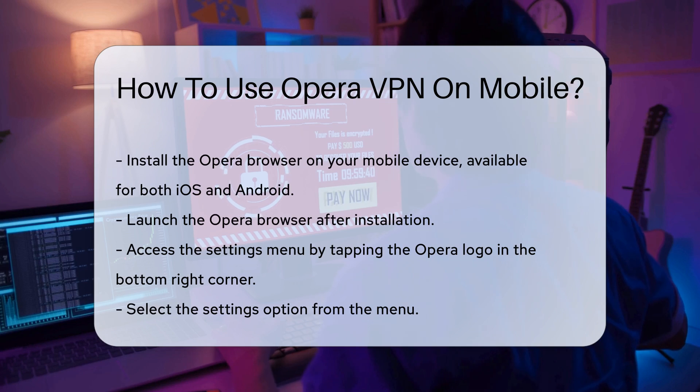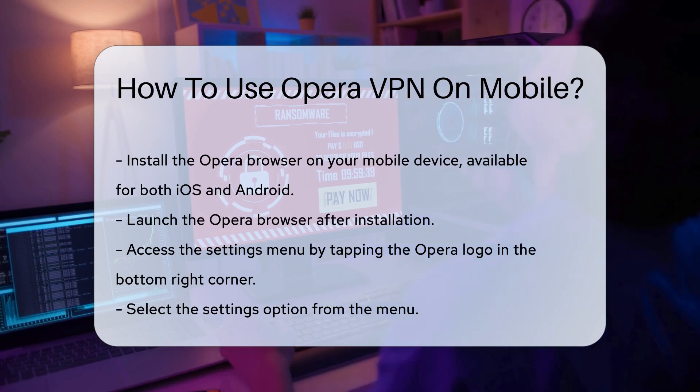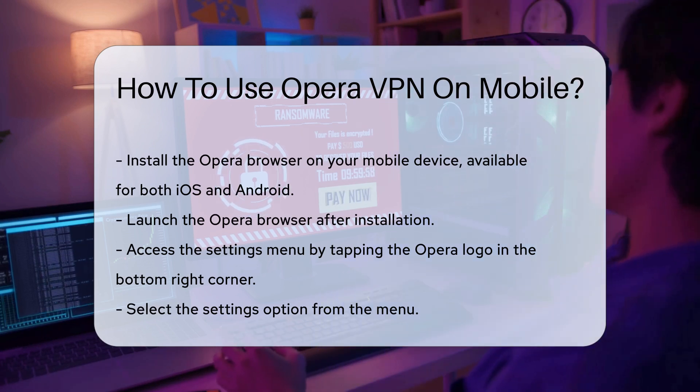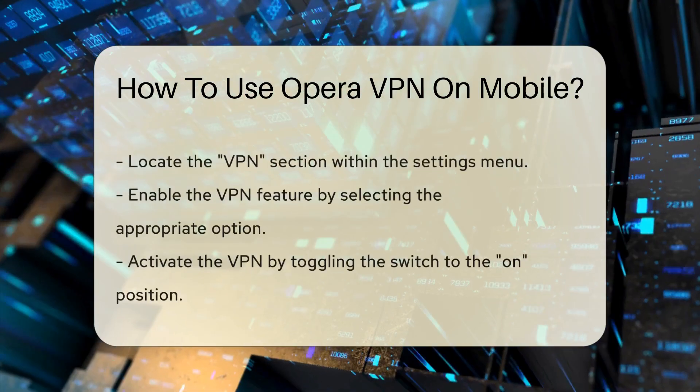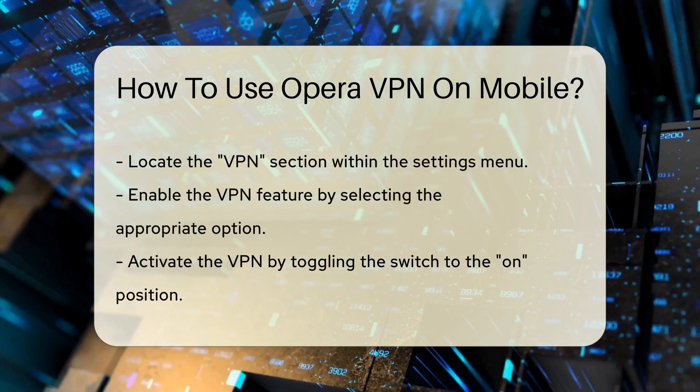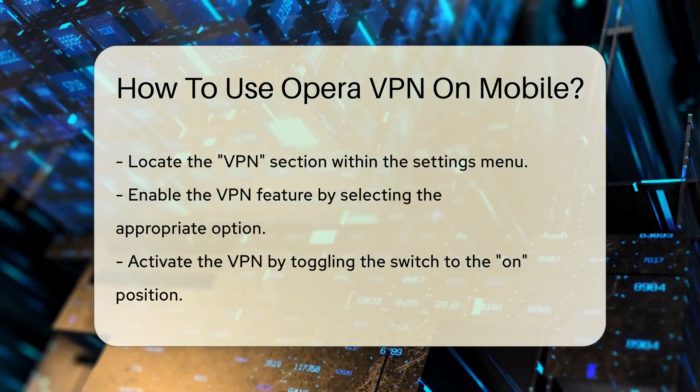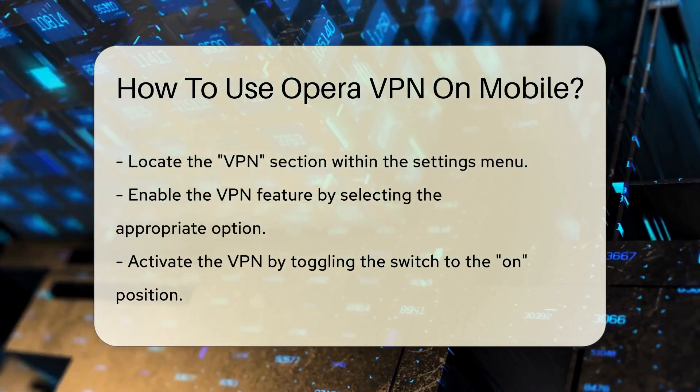Next, navigate to the Settings menu. You can find this by tapping the Opera logo in the bottom right corner, then selecting the Settings option.